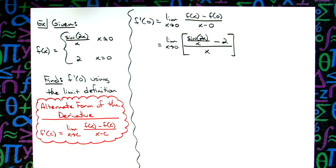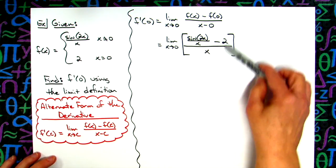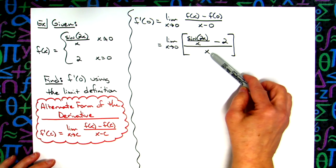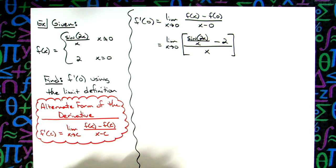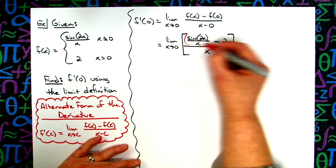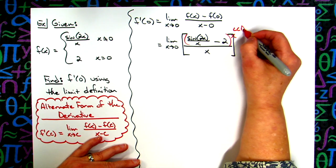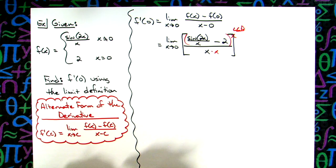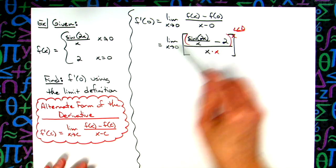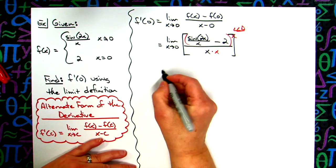Now I've got a complex rational expression there in the center, so I want to algebraically manipulate this to get rid of that. So I'm going to multiply through by the least common denominator of x, multiplying through by x so that I can get rid of that fraction right there.